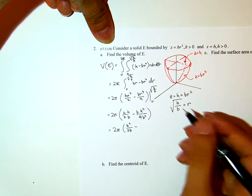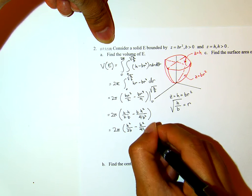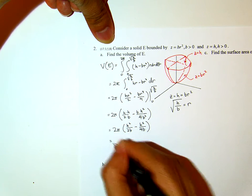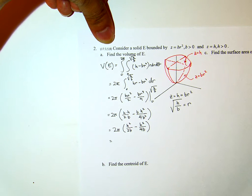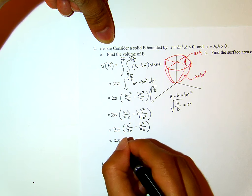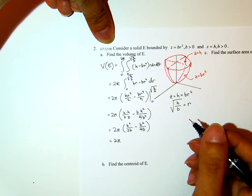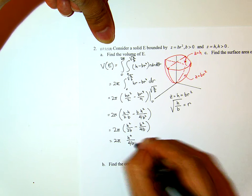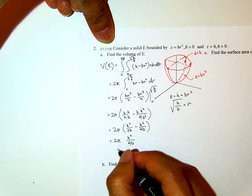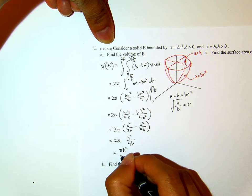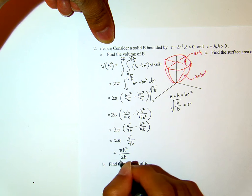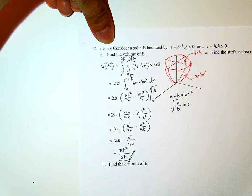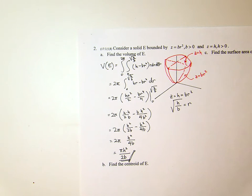Then this will be 2π parentheses H r squared over 2 minus Br to the 4 over 4, which is H squared over 4B. Which then becomes π H squared over 2B. That's the volume of that solid E.